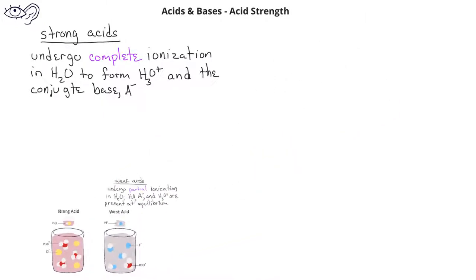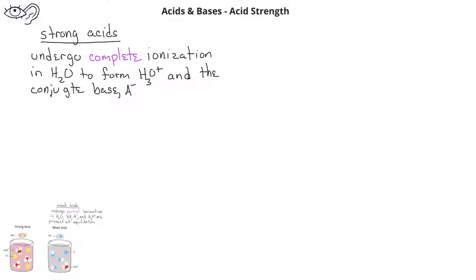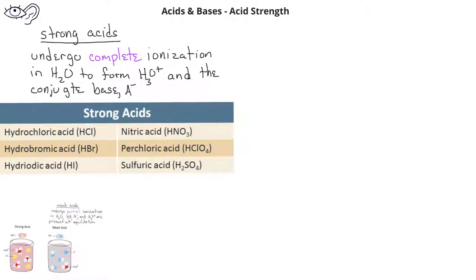Before we move on, it's probably a good time to remember what the strong acids are. There will be six compounds that we'll need to memorize as being strong acids. Most of the other acids we'll be dealing with will not be strong acids — they'll be weak acids. The six strong acids you should memorize are hydrochloric acid, hydrobromic acid, hydroiodic acid, nitric acid, perchloric acid, and sulfuric acid. Other acids will be considered weak acids unless otherwise specified.